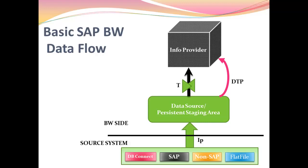The T stands for transformation. The data in PSA is of different format, and since we are extracting data from different sources and accumulating it at one location, there is no point in having data of different formats. So in transformation we convert the data from different formats into a uniform format, and with the help of DTP the data moves from data source to info provider. Info package and DTP are called schedulers — they control the flow of data.